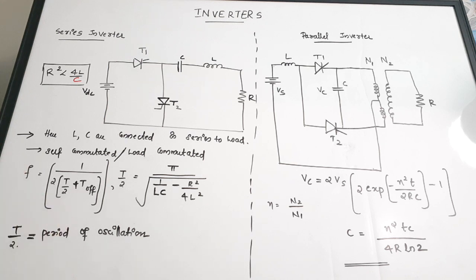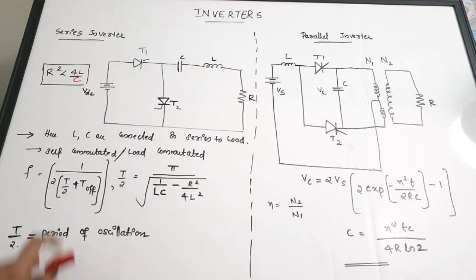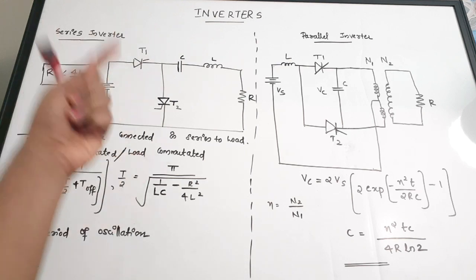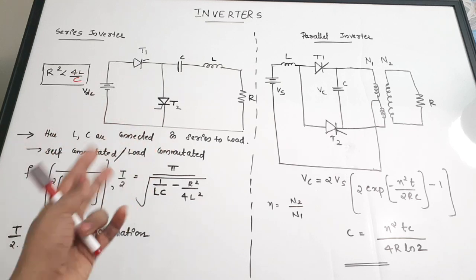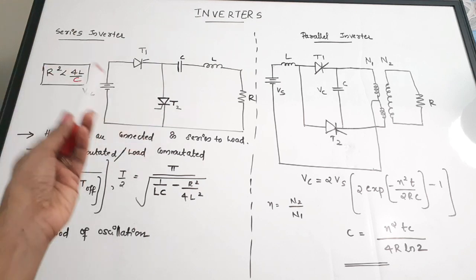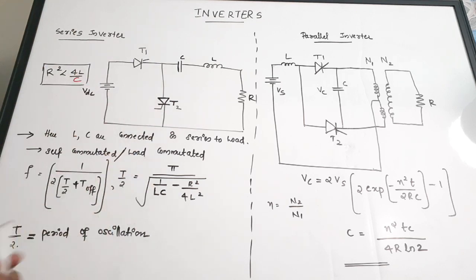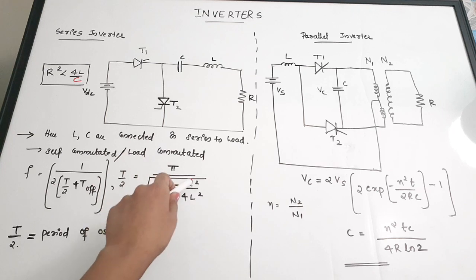Talking about the output frequency f of the waveform — we are generating an AC waveform, so it will have a frequency. f is given by 1 / (2 × (T/2 + T_off)), where T/2 is the period of oscillation and T_off is the time gap between when one thyristor turns off and the next thyristor turns on. The period of oscillation T/2 is given by π / √(1/LC − R²/4L²).